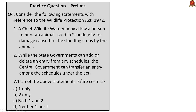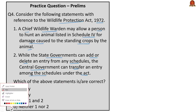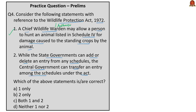Practice prelims question 4: Consider the following statements with reference to the Wildlife Protection Act of 1972. Statement 1: a chief wildlife warden may allow a person to hunt an animal listed in Schedule 4 for damage caused to standing crops. Statement 2: while state governments can add or delete an entry from any schedule, the central government can transfer an entry among schedules. Statement 1 is correct — Section 11 allows the chief wildlife warden to permit hunting of a Schedule 4 animal for damage to standing crops or human life. Statement 2 is wrong — under Section 61, the power to alter entries rests with the central government, not state governments. The correct answer is option A, 1 only.